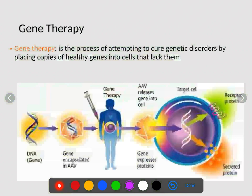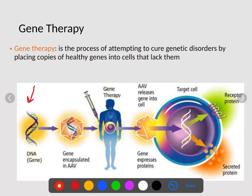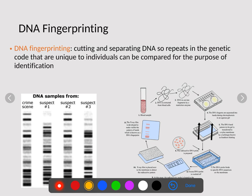One way humans can be cured is through a process called gene therapy. Gene therapy is a process of attempting to cure genetic disorders by placing copies of healthy genes into cells that lack them. What they do is take a gene or segment of DNA that codes for the needed protein, insert it into a virus, and that virus is then injected into the body. When that virus attacks our cells, it injects the target DNA into our cells, allowing our body to produce the thing we are lacking. Gene therapy is a commonly used way to cure some genetic disorders.